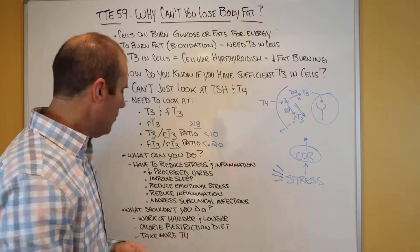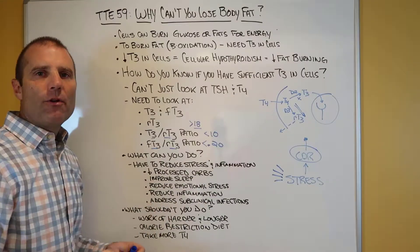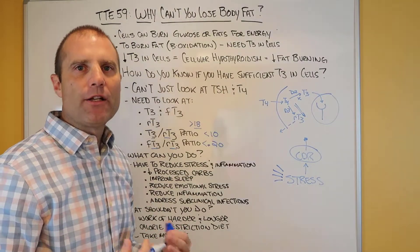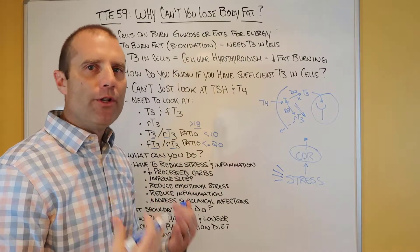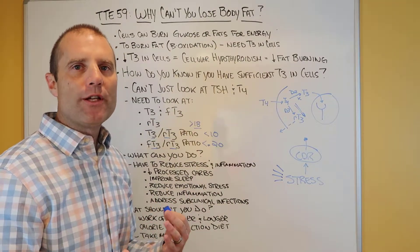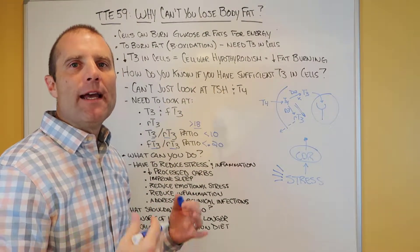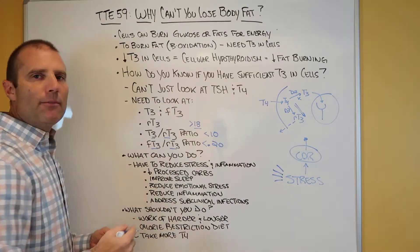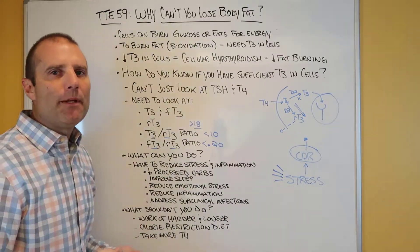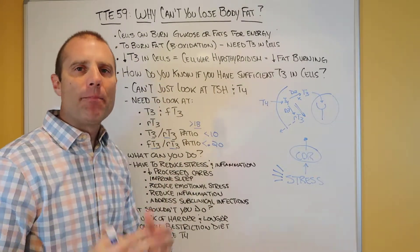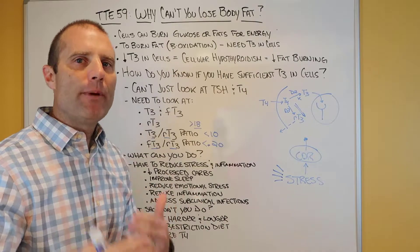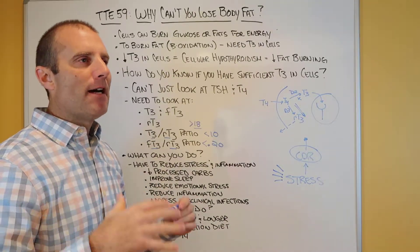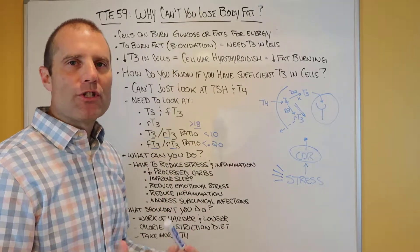So what can you do specifically? You want to decrease the processed carbohydrates — especially things like gluten, which has a high correlation with thyroid disorders. You want to improve sleep quality. A lot of people don't have good sleep habits. The body heals and repairs when you sleep, and it's not about how long you just lay in bed.